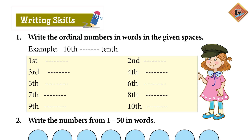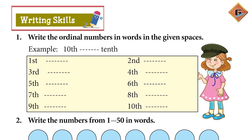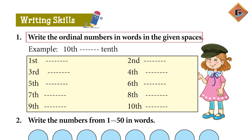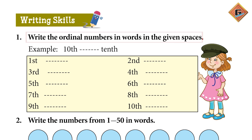Now let's move to page number 30, which covers writing skills. In writing skills, question number one says: write the ordinal numbers in words in the given spaces. We have two types of numbers. First are cardinal numbers — cardinal numbers are the ones we call one, two, three — whether written in digits or in words, those are our cardinal numbers.